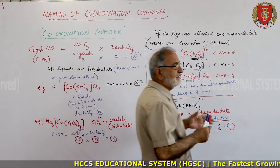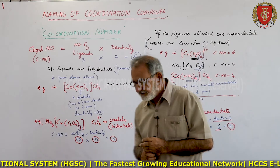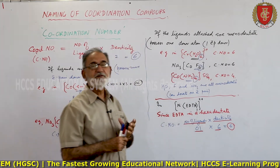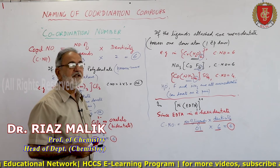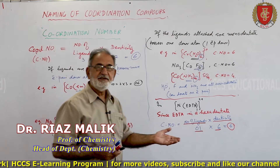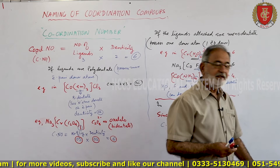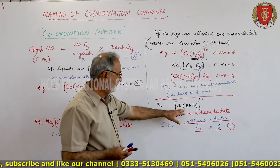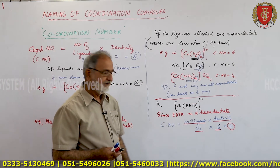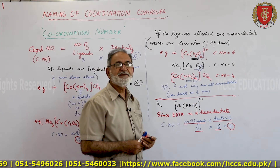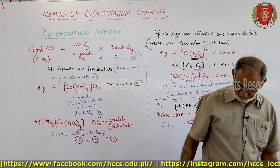When ligands are polydentate, the number of electron pairs donated differs by type: bidentate donates two electron pairs, tridentate donates three. In the case of EDTA — ethylenediamine tetraacetate — it is hexadentate, so its coordination number contribution will be six.